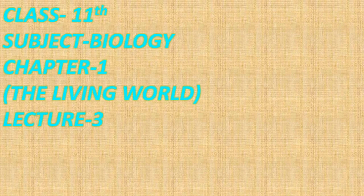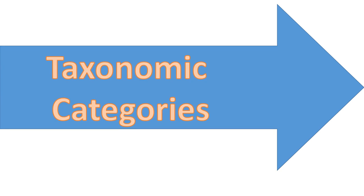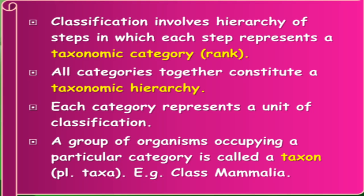Good morning. This is 11th class biology, lecture 3 of chapter 1. Today you will learn about taxonomic categories. Classification is the grouping of organisms into convenient categories based on their characteristics. This classification is not a one-step procedure — it involves many steps.